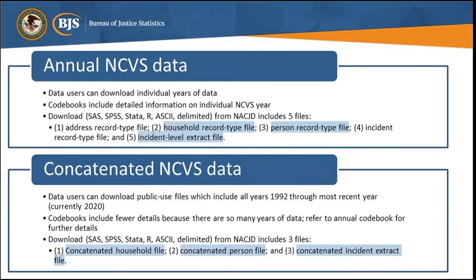The person file contains information about each household member age 12 or older. The primary use of this file is to estimate the number of persons aged 12 or older in the U.S. The incident file contains information from the incident report completed for each household incident or person incident mentioned during the NCVS interview.